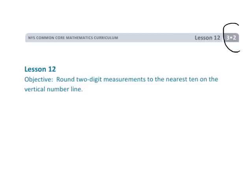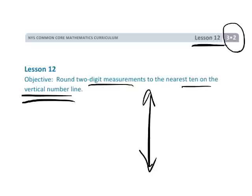This is Grade 3 Module 2 Lesson 12, and we're going to be rounding two-digit measurements or two-digit numbers to the nearest ten. What's specific is we're going to be using a vertical number line rather than the classic method.